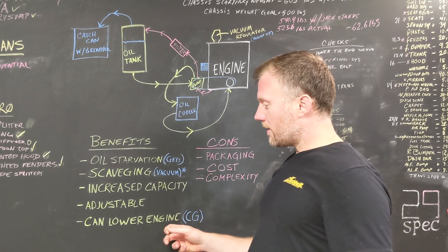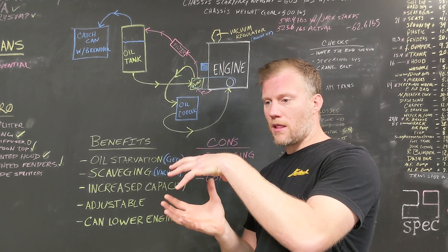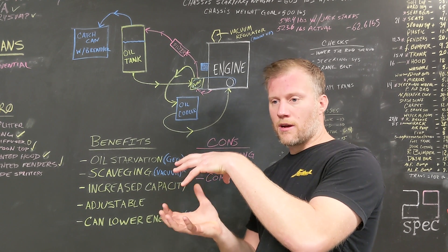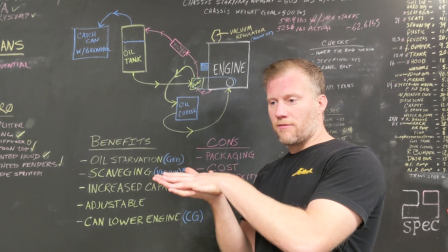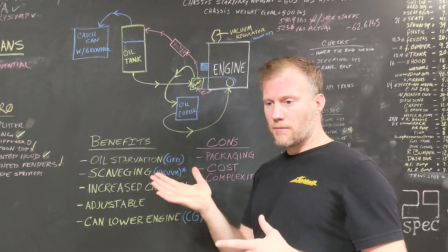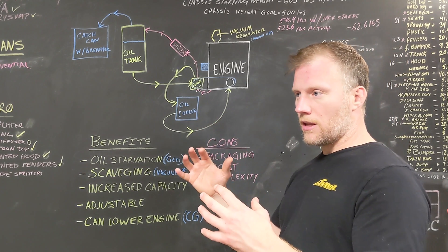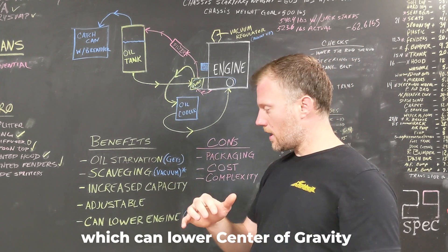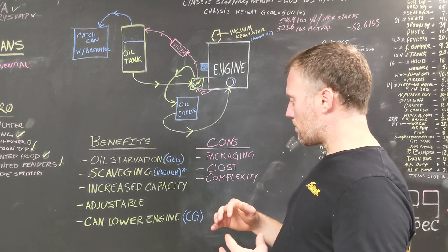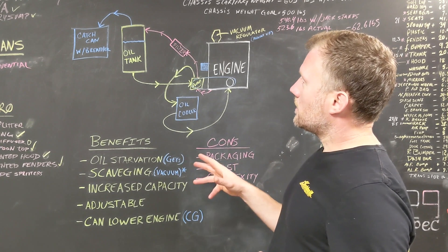So another benefit is you no longer have that tall or that large oil sump at the bottom on a wet sump system. So it's basically just a flat pan. So you save, I don't know, possibly four inches or so. So you can lower your engine down a little bit more without having to worry about it hitting anything because of that short pan. Okay, so that's the benefits.